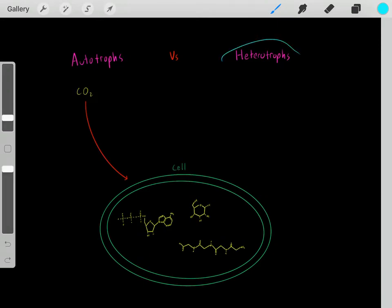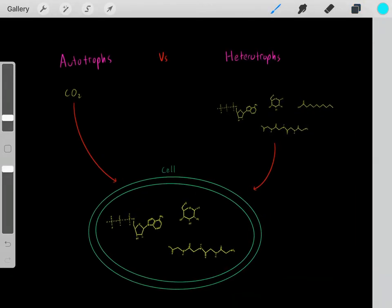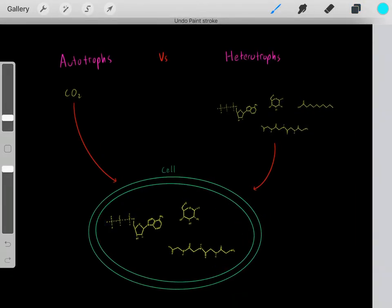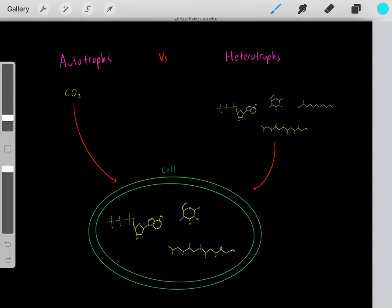However, you can also have a heterotroph. So what is a heterotroph? A heterotroph also needs these carbons to create the organic molecules they need for life. But if you're a heterotroph, you get your carbons to create all your own organic molecules from other organic molecules.